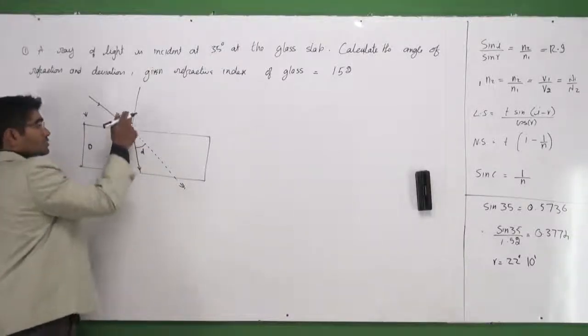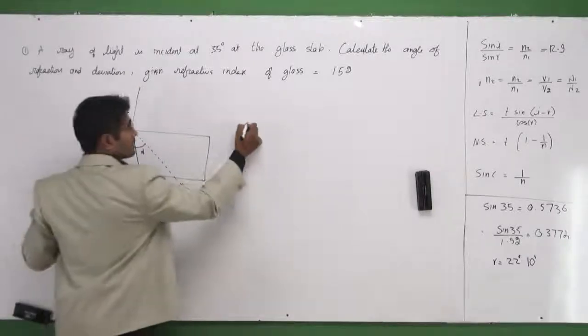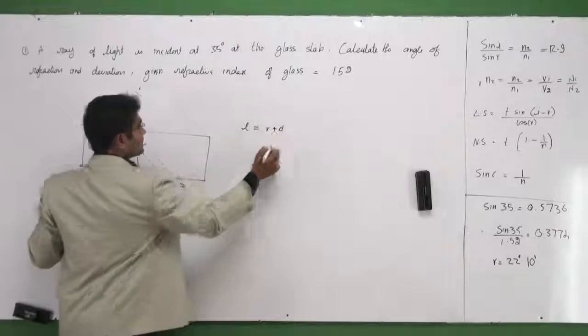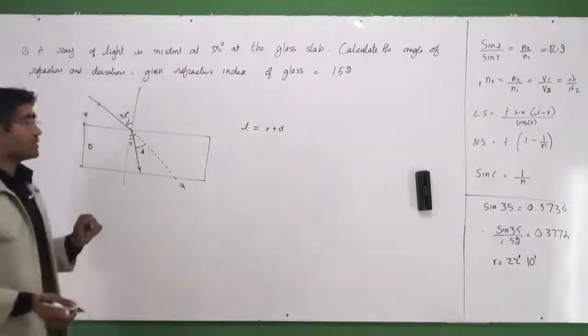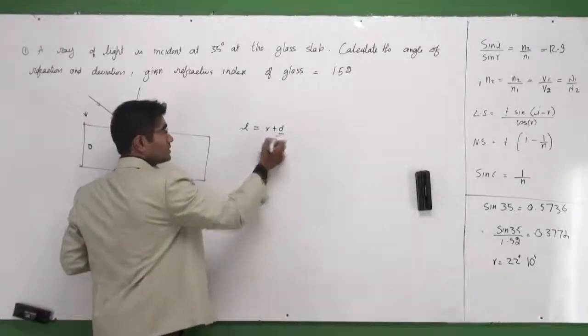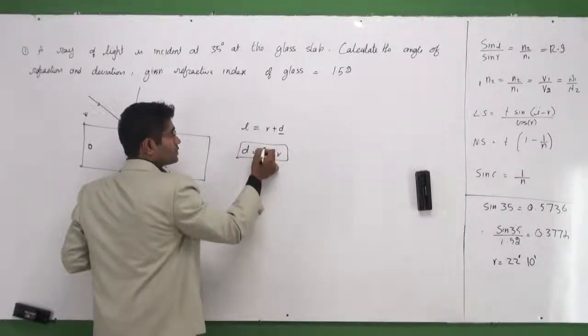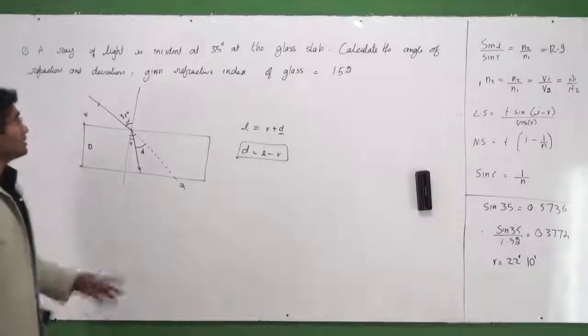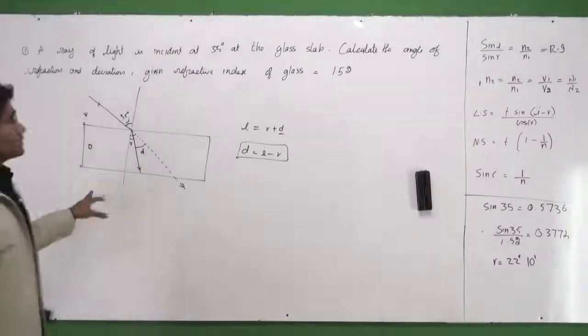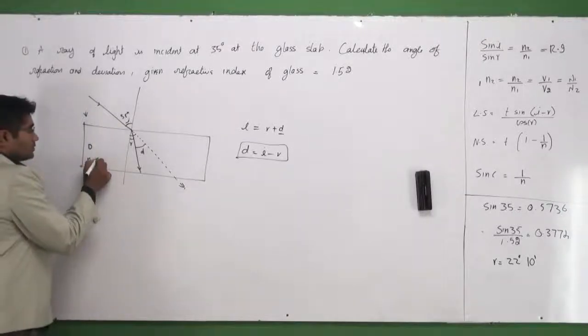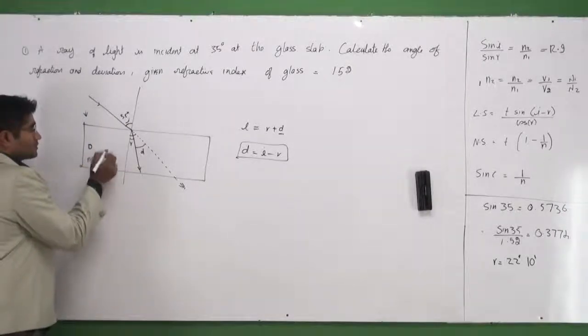I can see there's a relation between i, r, and d. I can see that i is in fact made up of r and d—that is r plus d—because I know that this angle and this angle are vertically opposite angles. From here, can I find d? d is nothing but i minus r. This is one of the formulas you need to know. Given that refractive index of glass is 1.52, so n is 1.52.